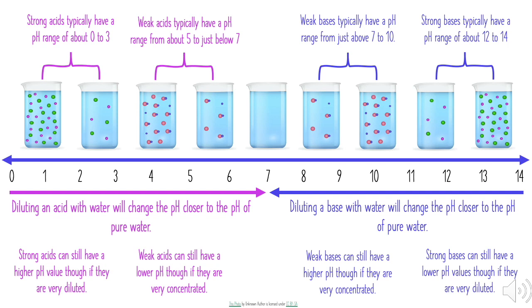These pH ranges are just a rule of thumb — they're not set in stone. It is very possible to take a strong acid and dilute it so that its pH is greater than 3, somewhere between 3 and 7. It's also possible to take a weak acid and make it more concentrated so its pH is less than 5, giving a higher hydrogen ion concentration. The same is true for the basic side: a strong base can be diluted to a pH below 12, and a weak base can be concentrated to a higher pH.